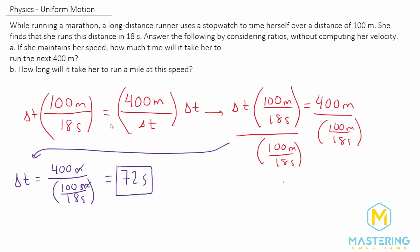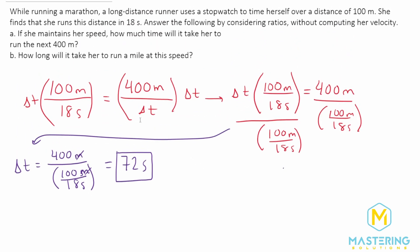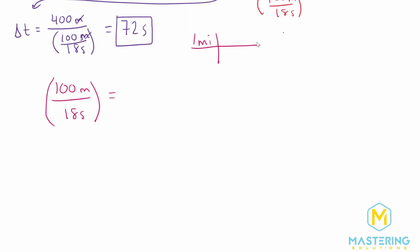Let's take this as an example of it not being quite so simple, and figure out how long it takes to run a mile at the same speed. Using the same ratios, we have 100 meters over 18 seconds. That's going to equal one mile, but we want it in meters. The useful data chart at the beginning of the book tells us that in one mile there is 1,609 meters.